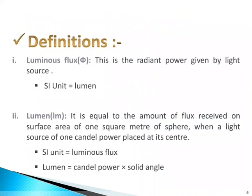Next, definitions. The first one is luminous flux, denoted by phi — this is the radiant power given by a light source, and its SI unit is lumen. Second, lumen, denoted by lm: it is equal to the amount of flux received on a surface area of one square meter of a sphere when a light source of one candle power is placed at its center. Its SI unit is luminous flux, and lumen equals candle power multiplied by solid angle.